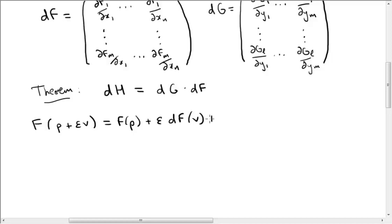Plus an error term, which I'll call error in the f function. It's just the error we make in making this Taylor approximation. Similarly, there'll be an approximation for g and an approximation for h.